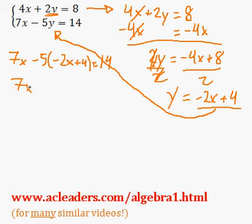Now I can actually just expand the negative 5 in here. Negative 5 times negative 2x is 10x, negative 5 times 4, negative 20, equals 14.